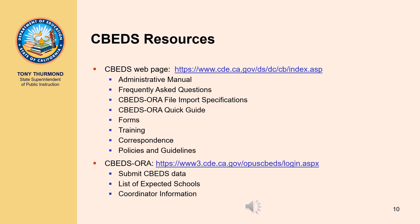The following resources are available to CBEDS coordinators to aid in the collection and submission of CBEDS data. The CBEDS webpage contains the information needed to complete the CBEDS data submission, including the Administrative Manual, Frequently Asked Questions, File Import Specifications, the Quick Guide, Forms, Training, Correspondence, Policies and Guidelines, and more. CBEDS Aura is the online application used by CBEDS coordinators to submit CBEDS aggregate data to the CDE.